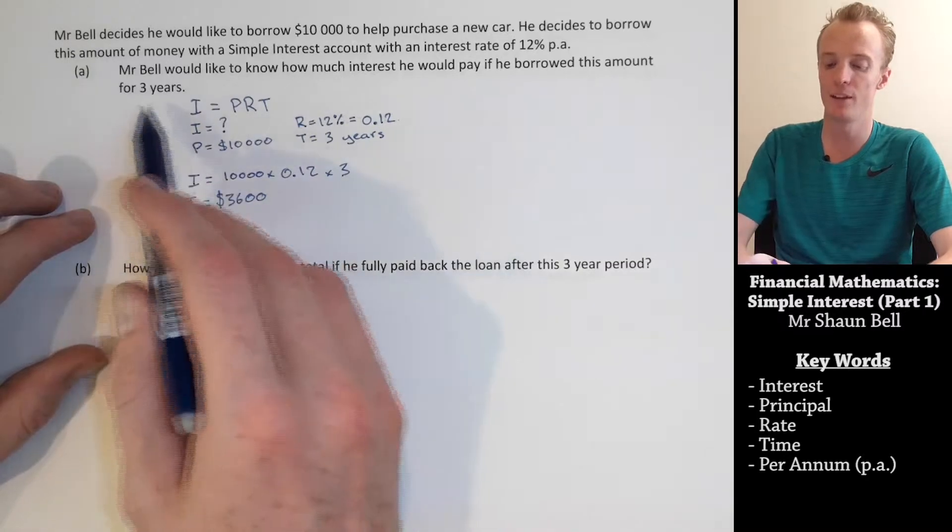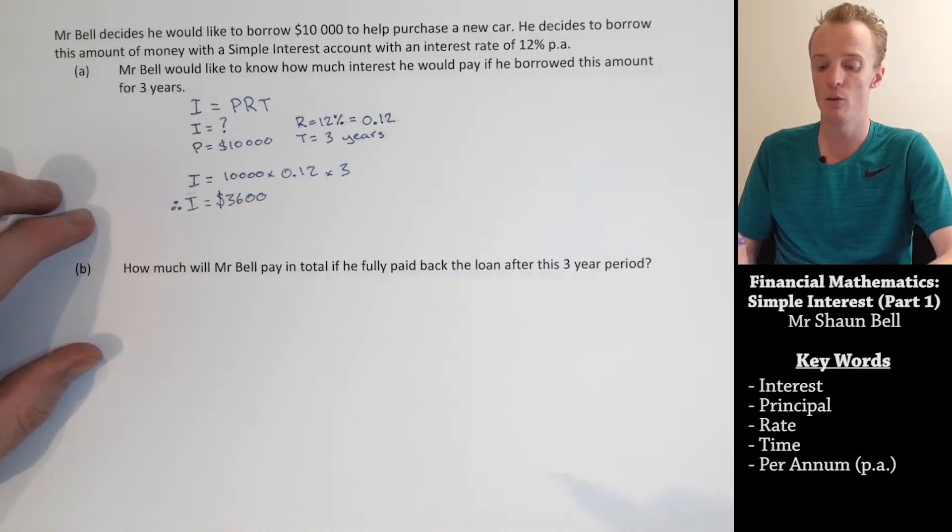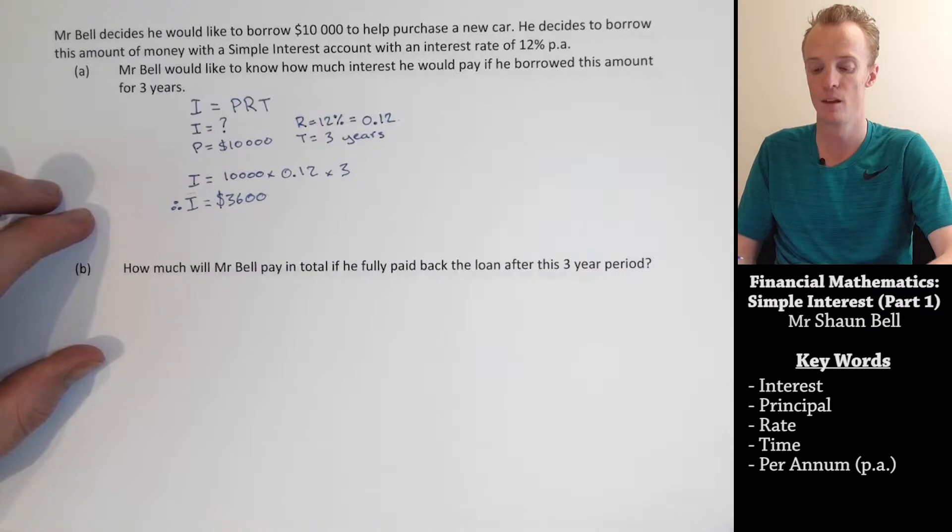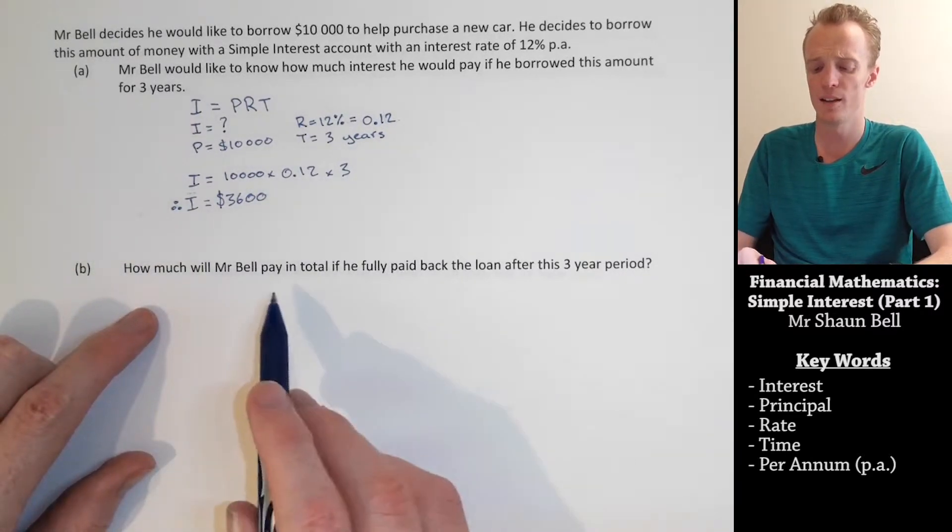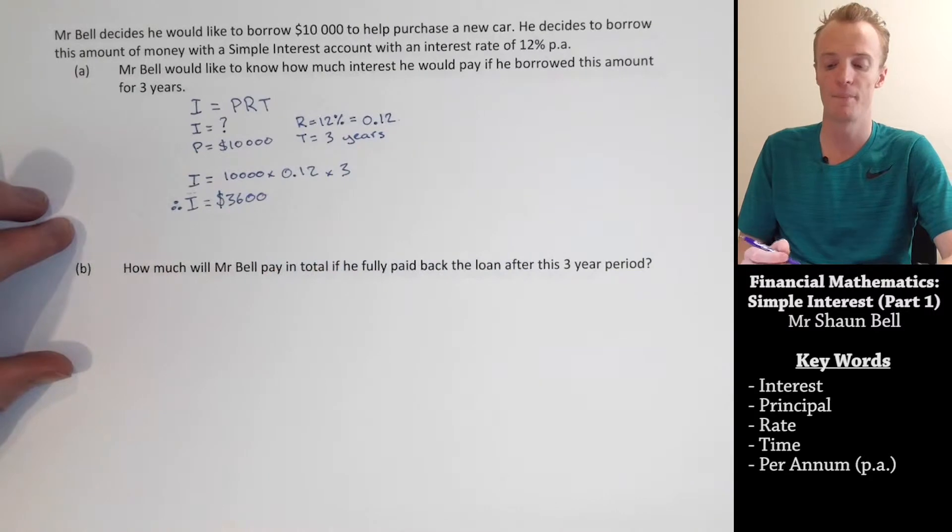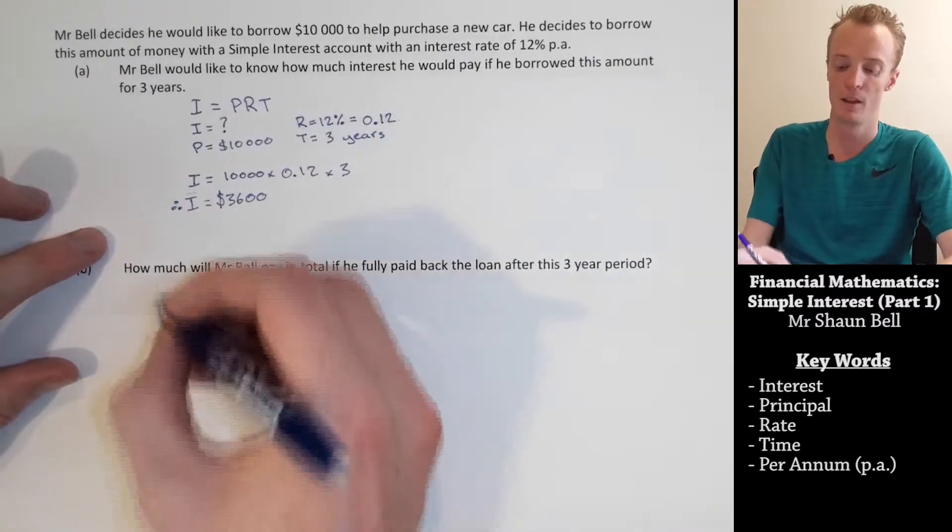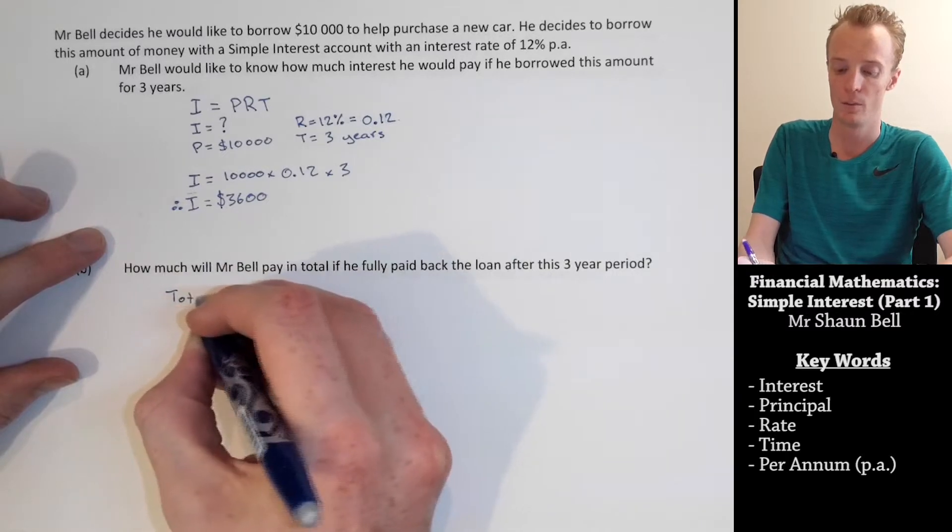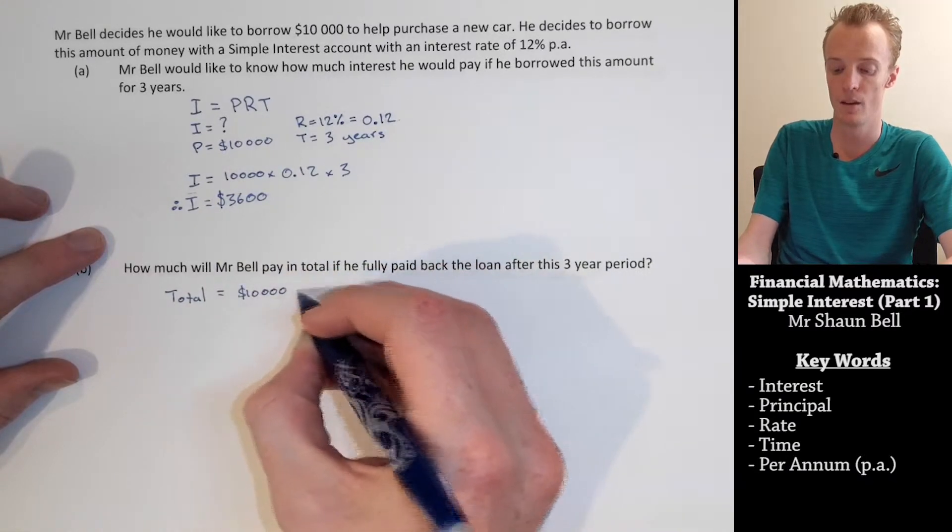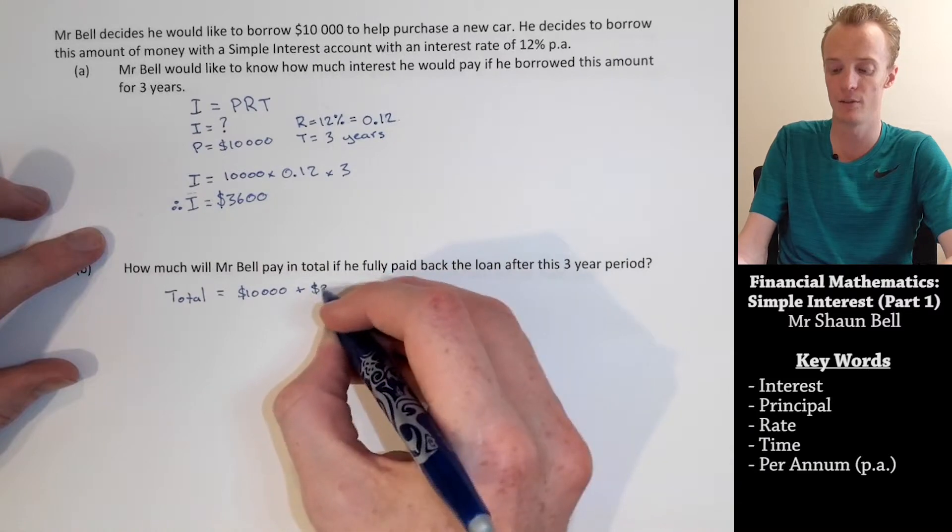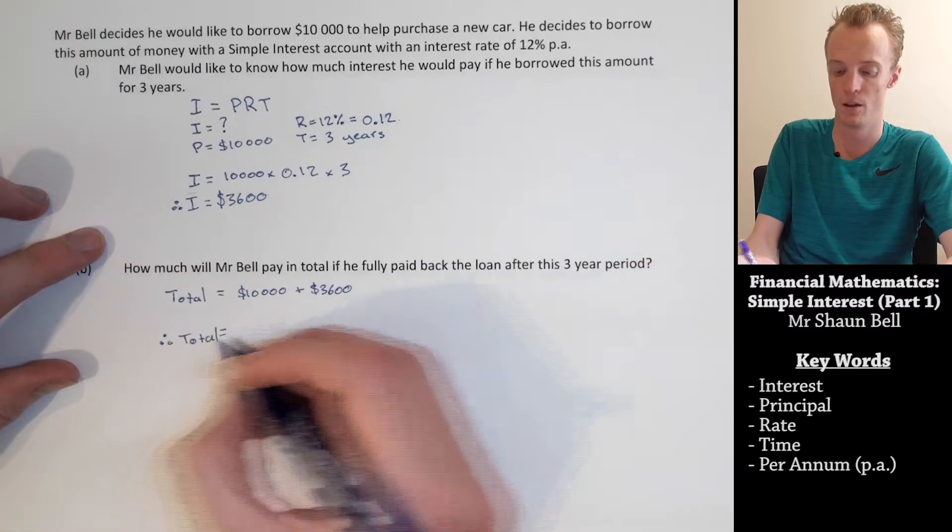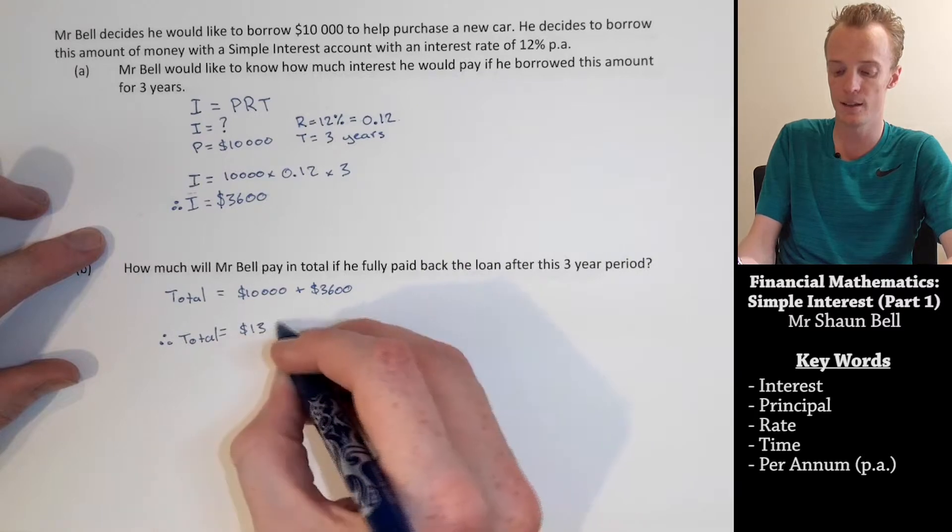And I need to indicate that I have found the final answer by putting therefore. So, therefore, if I take three years to pay back this $10,000 loan, I'll essentially pay an extra $3,600 on top of my loan. So, in this question here, where it's asking me how much will I pay in total if I paid it fully back, I need to take this interest amount and add it together with the principal. So, the total that I'll pay, which I'll indicate as total here, will be our principal of $10,000 plus our interest of $3,600. Now, together, that means that the total will be $13,600.